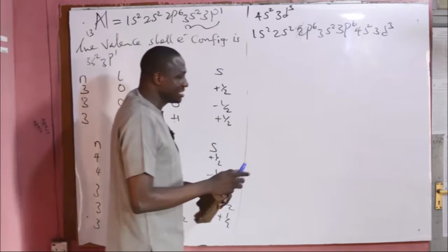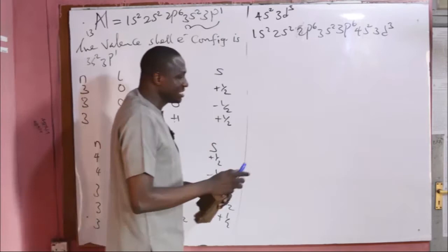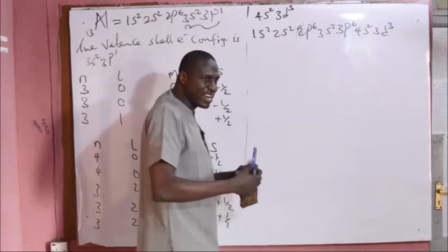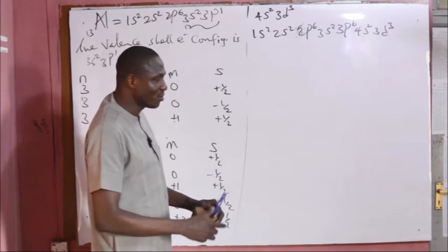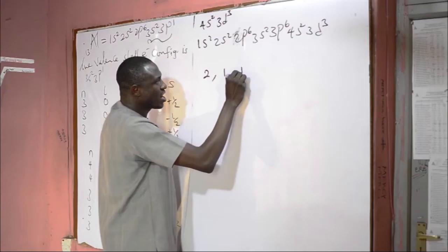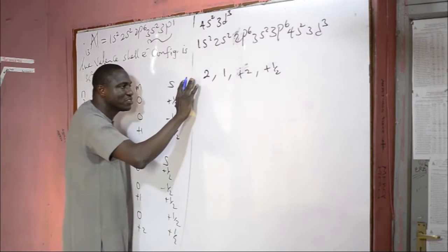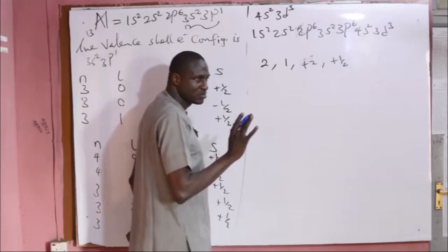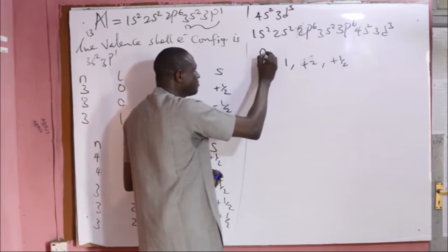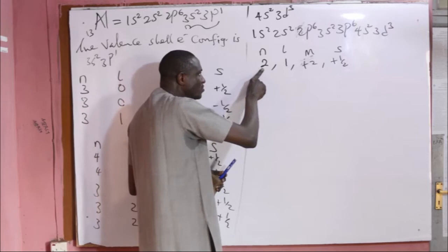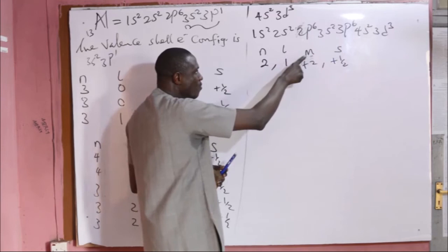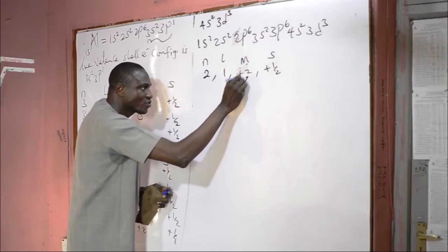Another type of question is where you are given a set of four quantum numbers and asked whether it is allowed or not. For instance, given the set (2, 1, +2, +½): since n = 2, the azimuthal quantum number l can be 0 or 1, so l = 1 is correct. However, when l = 1, the magnetic quantum number m can only be +1, 0, or −1. A value of m = +2 is not allowed, making this set not permitted.